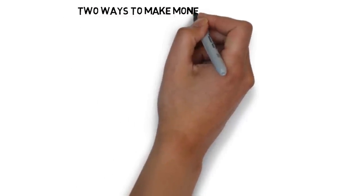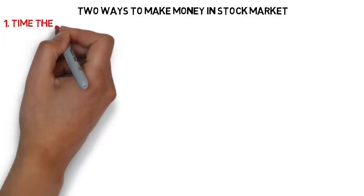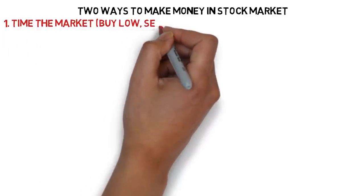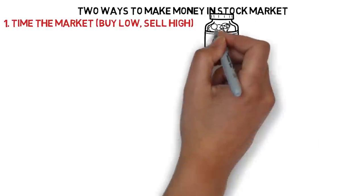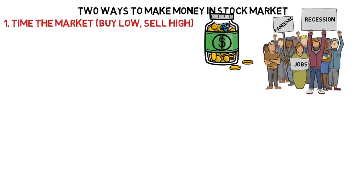In the stock market, there are two ways to make money. One is to time the market, that is, buying when the markets are low and selling when the markets are expensive, which is psychologically very difficult. This involves investing huge sums of money during highest pessimism and uncertainty and then selling at the time of high optimism.